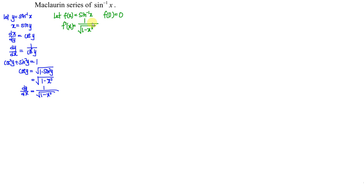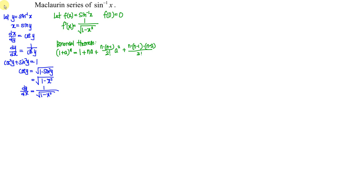So we are not going to use the conventional method. What we use here is the binomial theorem. The binomial theorem states that if we have 1 plus a to the power of n, then we have 1 plus n times a plus n times (n minus 1) over 2 factorial times a squared, plus the term with a to the power of 3, and so on.